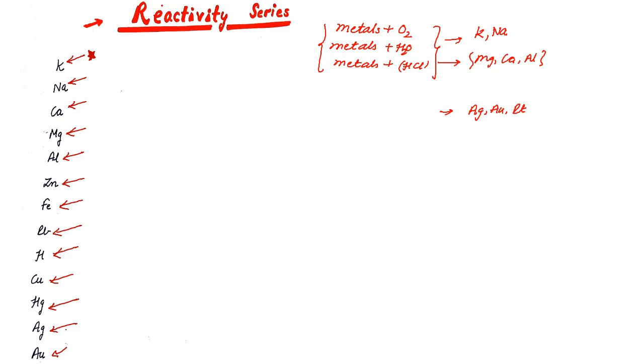The mnemonic goes like this: K stands for Katappa - you must have watched Bahubali. Katappa Ne Kar Me, so K Na Ca Mg will be Katappa Ne Kar Me. Then Al could be taken as Aakar, Zn will be Jaakar. So Katappa Ne Kar Me Aakar Jaakar.